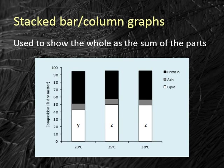Stacked bar and column graphs are similar to standard bar and column graphs except that they show the whole as a sum of the parts. In this case, we're looking at the overall composition of fish—total protein, ash, and lipid content—raised at different water temperatures. These figures are useful when you need to show how different components literally stack up. You can use a standard stacked column graph where the natural sum of values is shown, or a 100% stacked column graph where values are standardized to 100% to show percent contribution. Stacked bar graphs can also be a good way to show the number and taxonomic groupings of invertebrates found at different sites and other kinds of discrete data.